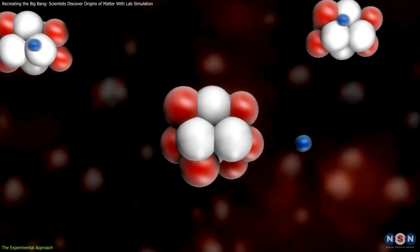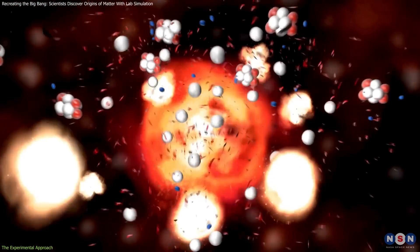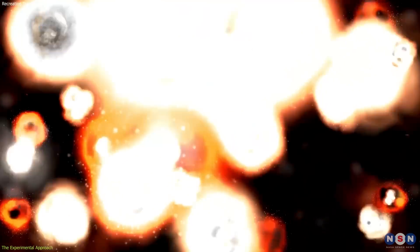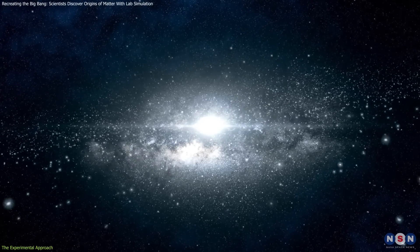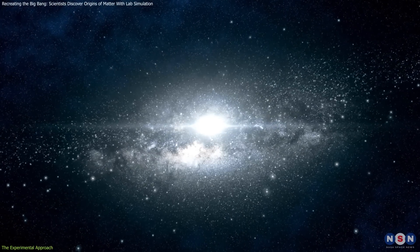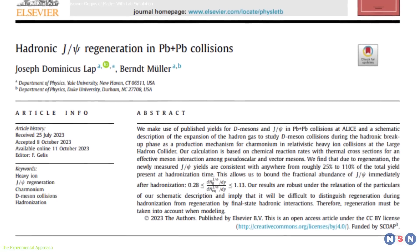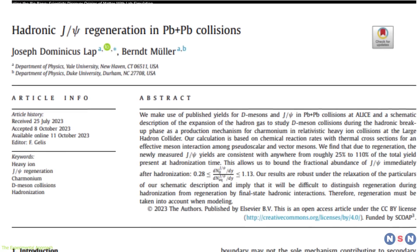At such extraordinary temperatures, ordinary matter as we know it, consisting of protons and neutrons, could not exist. Instead, the universe was a volatile expanse of quarks and gluons.